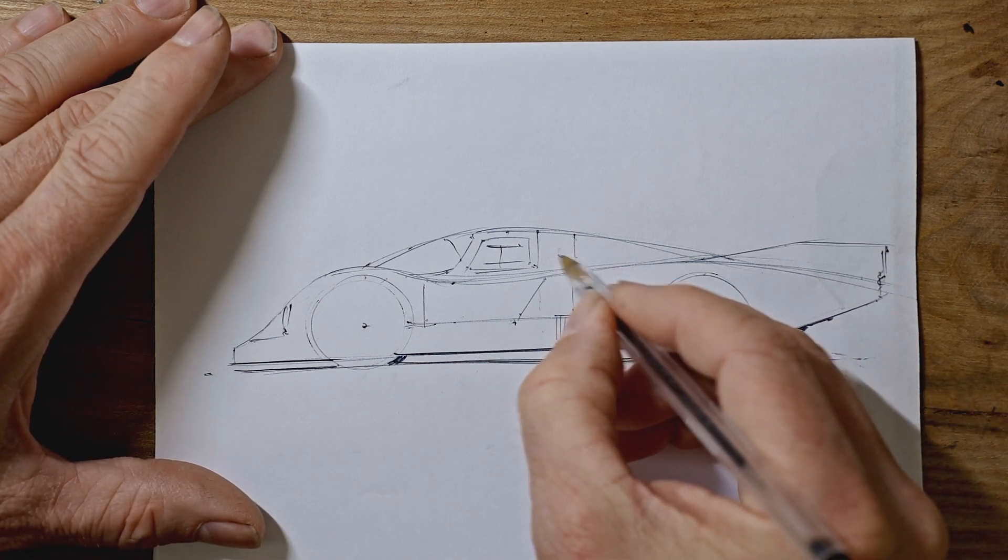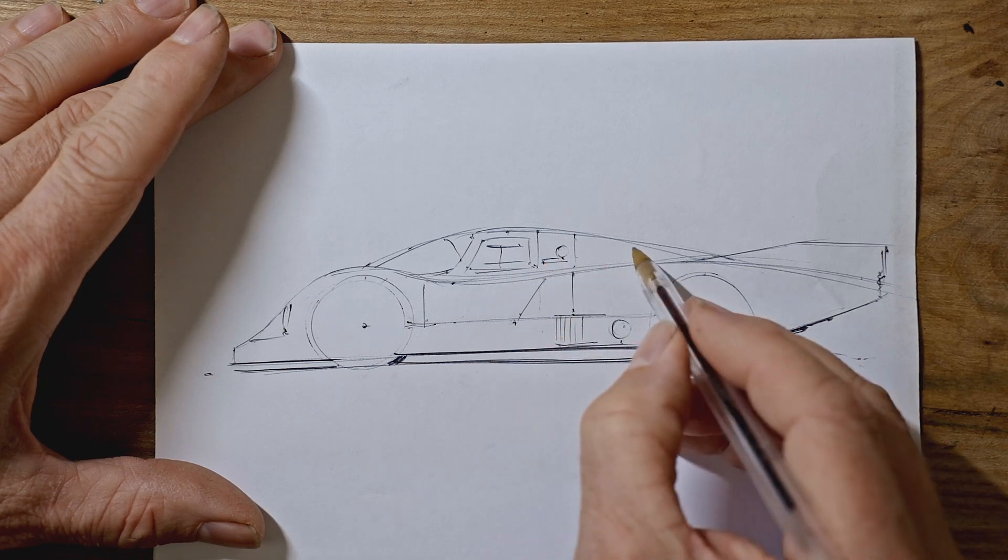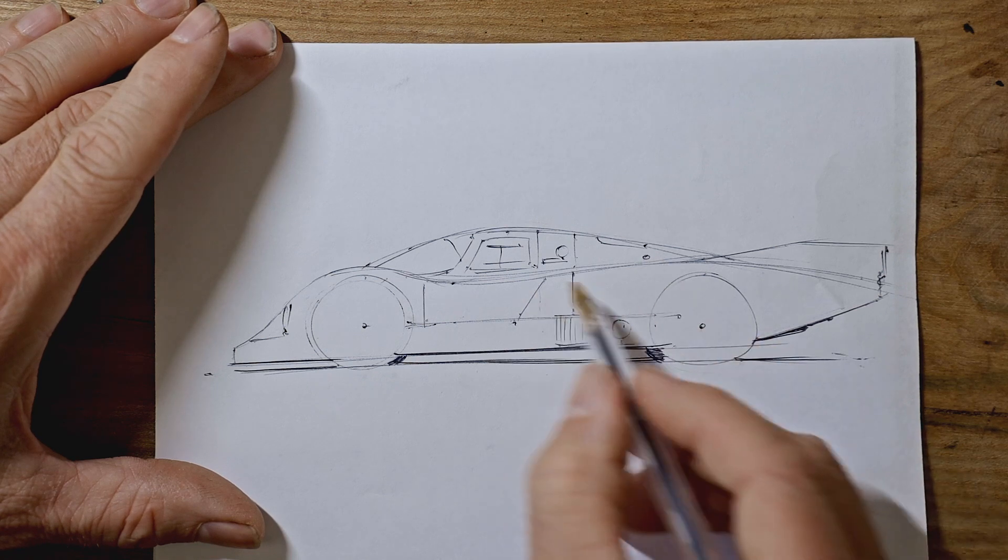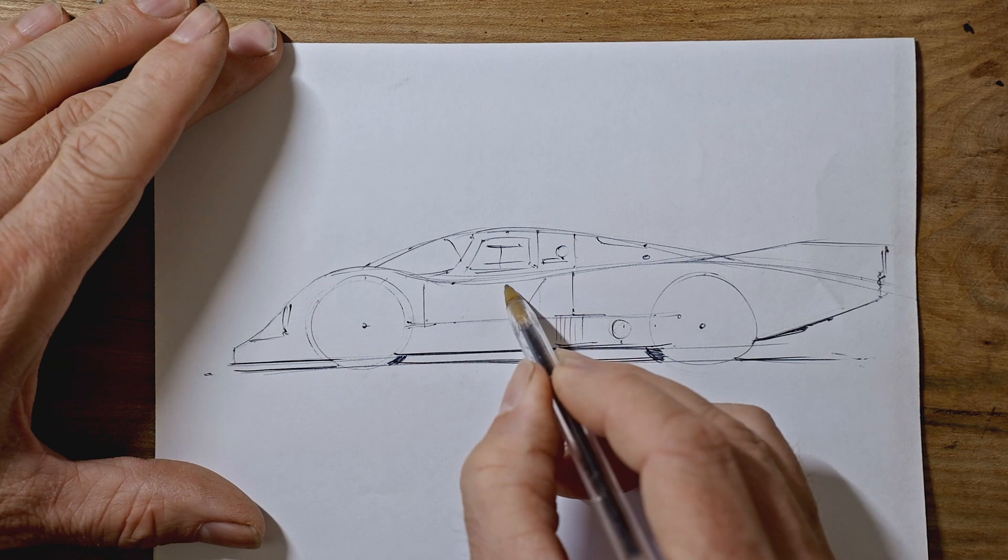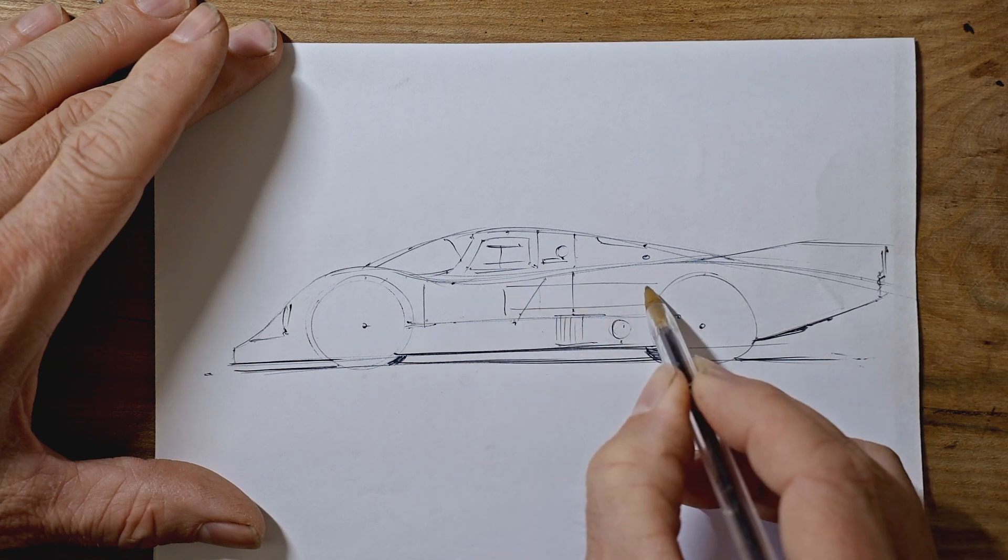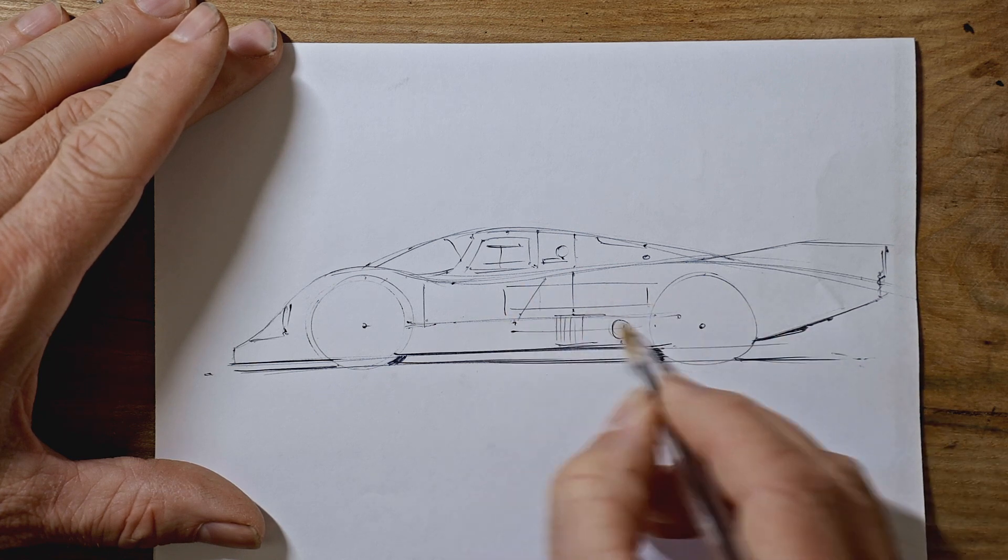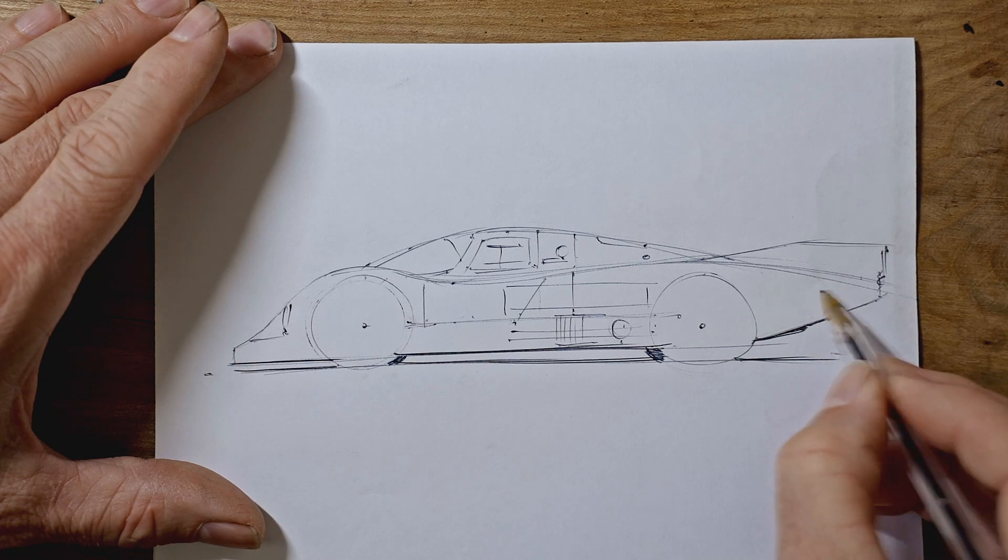And now we can add small details like the filler caps, logos. Rather than drawing or writing out everything, I tend to just do little boxes to show where the text is because otherwise you'd just make the drawing too complicated by writing everywhere. So some faint boxes would just give the idea that there's some stickers on.